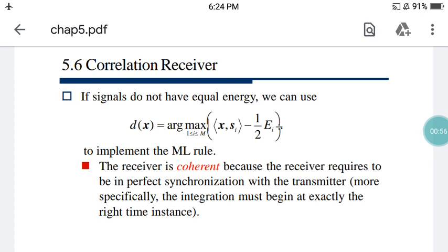The receiver is coherent because it requires perfect synchronization with the transmitter. More specifically, the integration must begin at exactly the right time instance. If you delay the integration to start either later or before the right time, some delay will be created inside the constellation diagram or signal space, and that delay will create much more error. The vector representation alone is not enough to handle this.